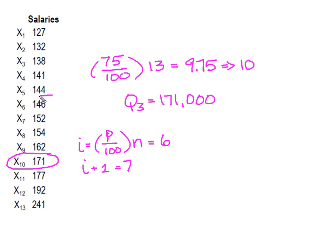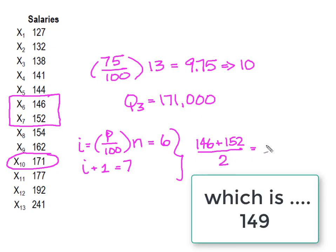So, I will take and I will average the 6th and the 7th value. So, in order to find this unknown whatever it is, I would take 146 plus the 152 divided by 2 and the result would be my value.